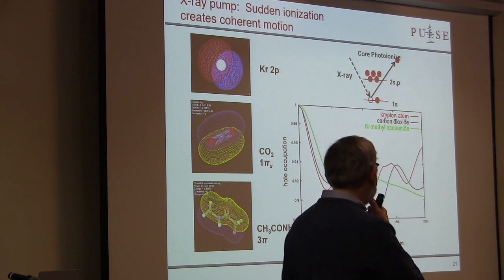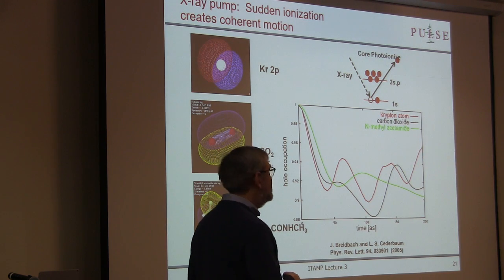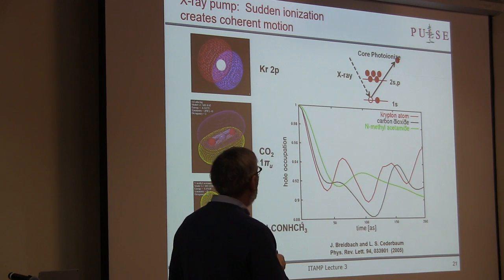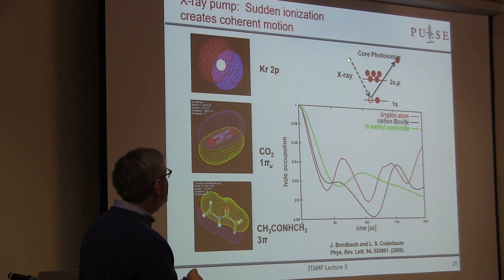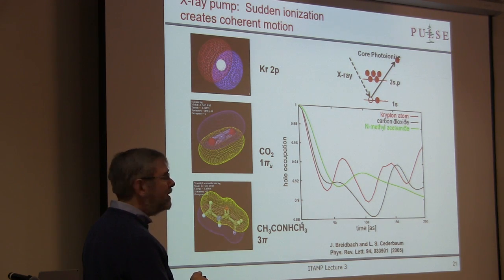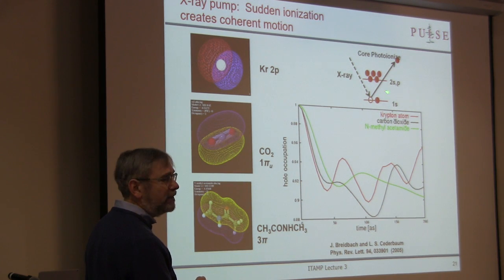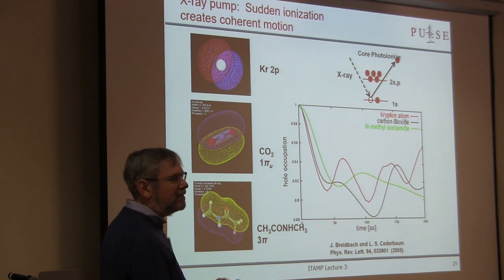Let's now get into the regime of x-ray ionization. When x-rays ionize something, as you heard from Linda, there's a very strong tendency for ionization to be inner-shell. It's a cross-section thing — way more electrons in the inner shell, and the cross-section is orders of magnitude bigger there. So you tend to ionize the inner shell: roughly nine electrons come out that way before one comes out from the valence, something like in neon.